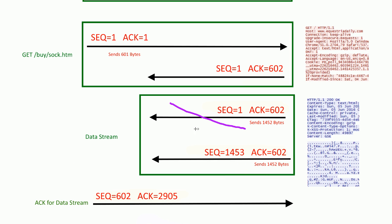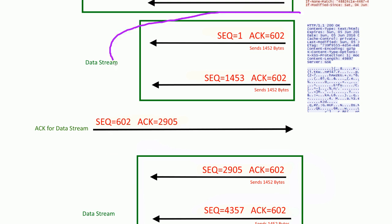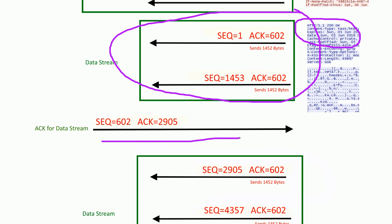If something weird happens like we lose one segment but receive a later one, there's more to the protocol. TCP is complex, and there's a thing called selective acknowledgement where you can indicate which segments were received and which weren't. That's a bit more complicated, but just know that so far things look good — we received an HTTP OK and an acknowledgement, so the connection is good.